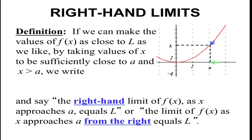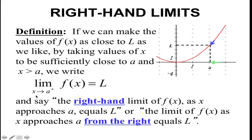Now we have right-hand limits. This is: if we can make the values of f of x as close to L as we like by taking values of x to be sufficiently close to A, and x is greater than A. So as we are coming from the right side of A, these x values are bigger than A, and we're coming from the right on the graph. We write: the limit as x approaches A from the right of f of x equals L, using a plus sign to represent from the right.